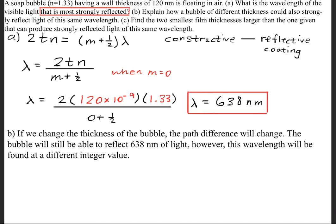So that's referring to those m values. So we might find 638 nanometers at maybe m is equal to 1, or maybe m is equal to 2. Now, for part C,